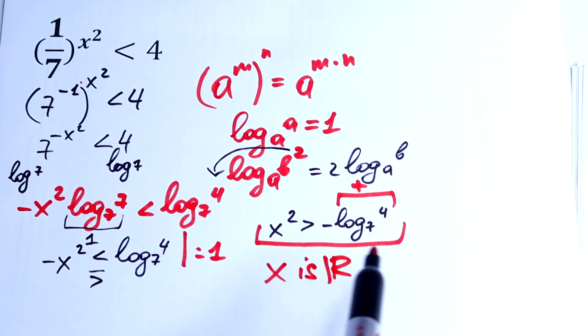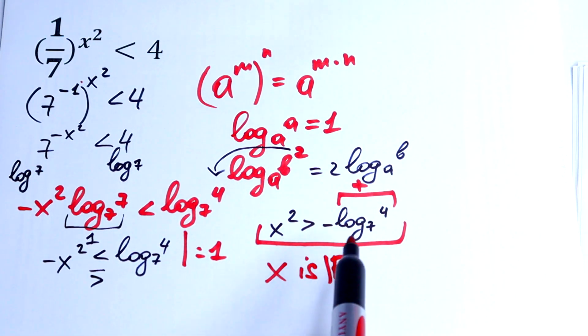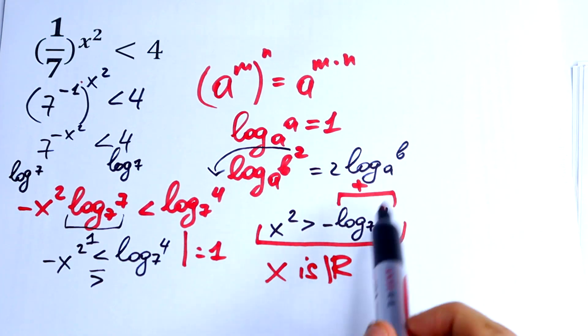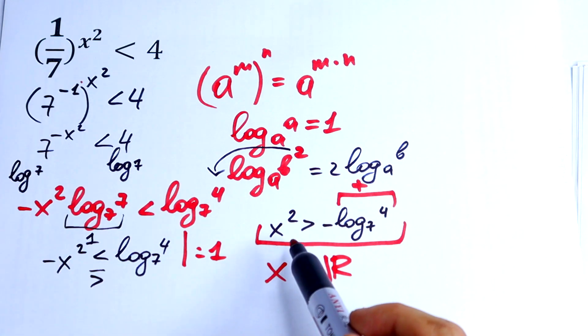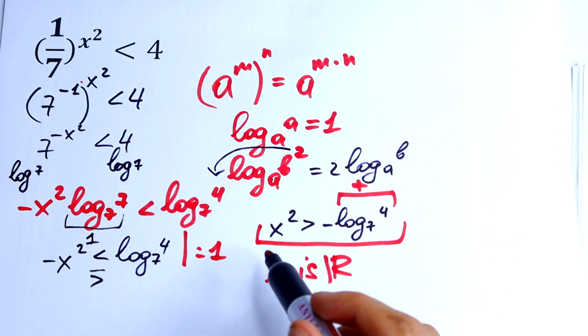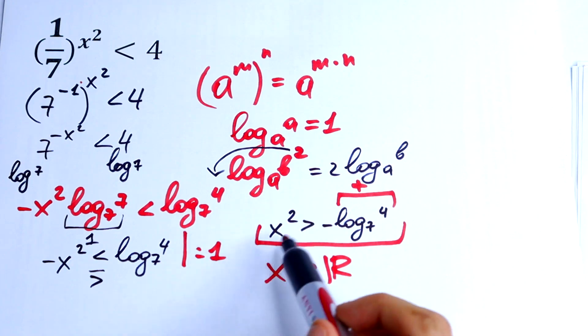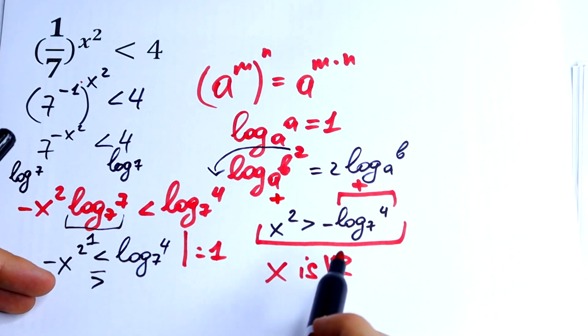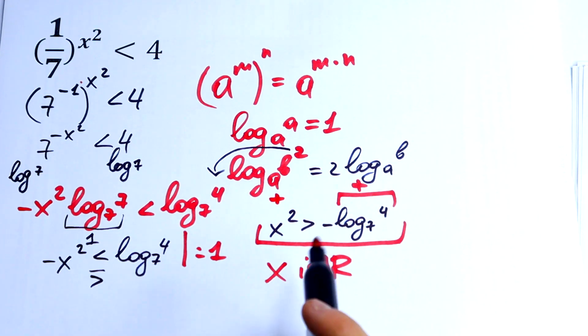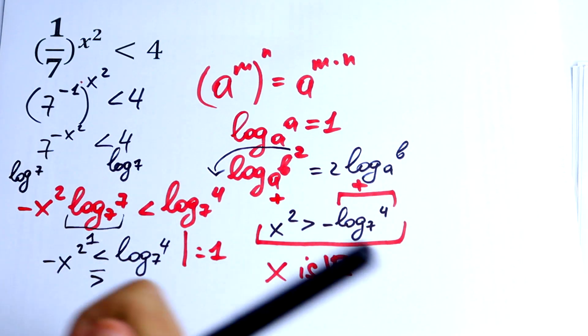This is a plus. We write right here a minus, so we will get on the right we will have a minus value. And on the left we will have, doesn't matter what number, but we raise this to the square and will be for sure plus. So x would be all real numbers.